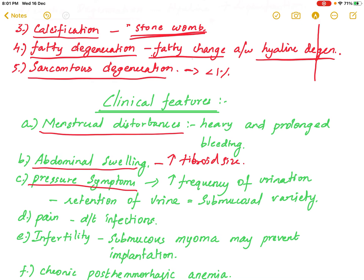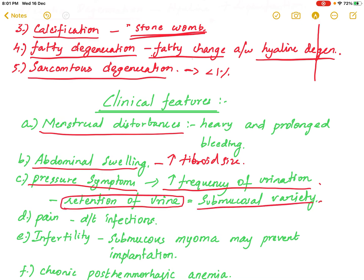Pressure symptoms involving bowel and bladder function include increased urinary frequency and retention, most commonly seen in the submucosal variety. Pain is another feature — aside from dysmenorrhea, pain can result from infections and different types of degeneration.